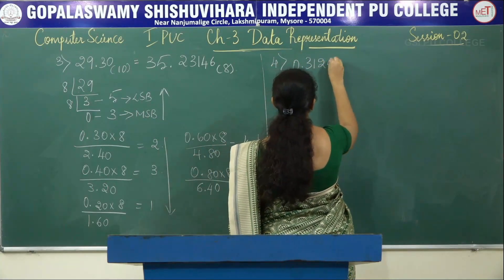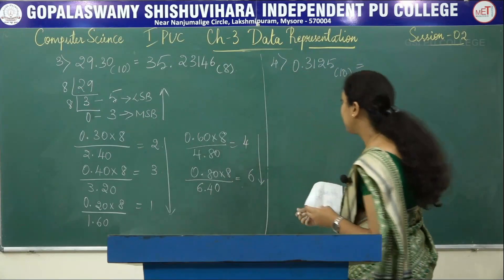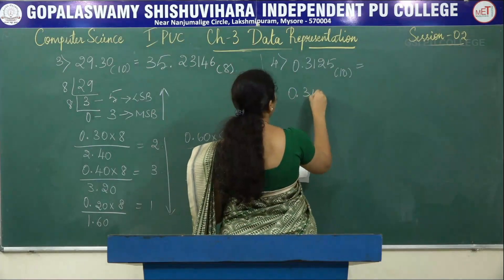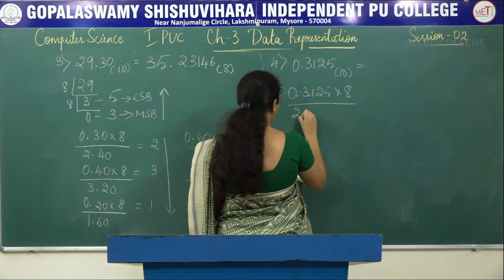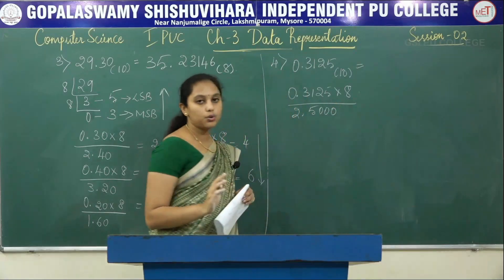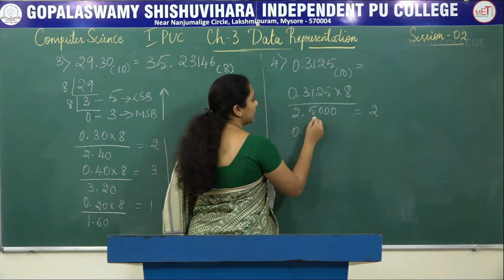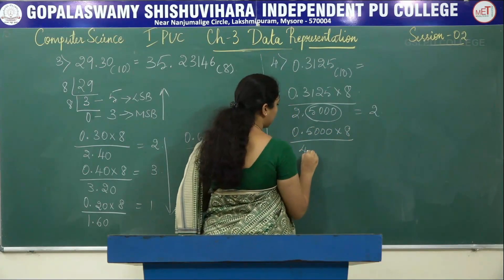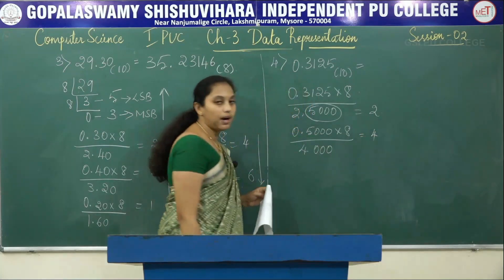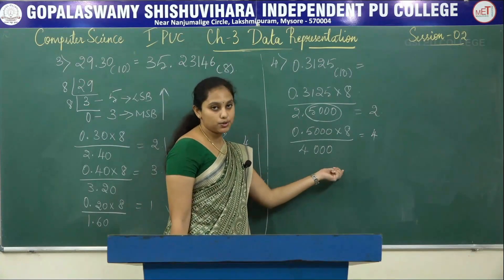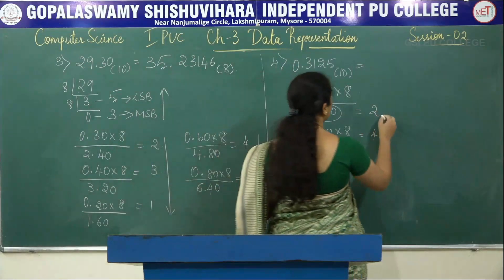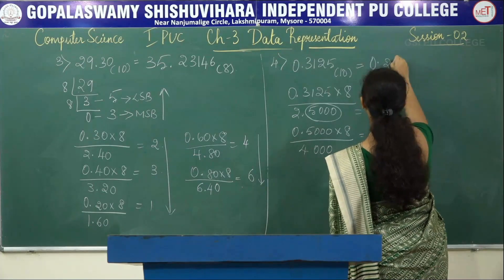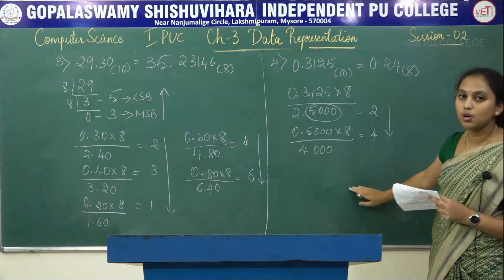Fourth problem: 0.3125 base 10. There is no integer part, so we multiply the decimal part by 8: 0.3125 × 8 = 2.500, take integer 2. Then 0.500 × 8 = 4.000, take integer 4. There is no remaining decimal part, so we stop. Therefore, 0.3125 base 10 equals 0.24 base 8. This is how we convert from decimal to octal. Thank you.